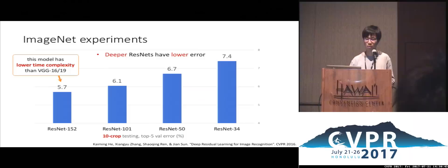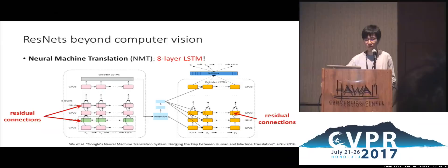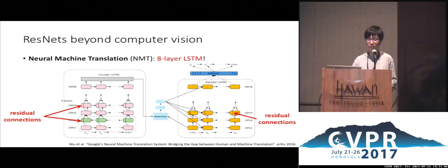ResNet is very popular even beyond computer vision. In a recent work on neural machine translation, they report training an 8-layer LSTM by stacking LSTM blocks with the help of residual connections. The paper reported that usually people are not able to train LSTMs with more than four layers, but with residual connections this is possible, achieving gains with up to eight layers or more.